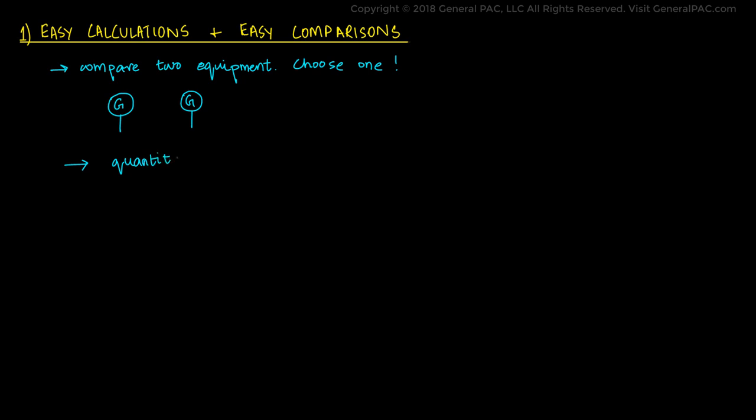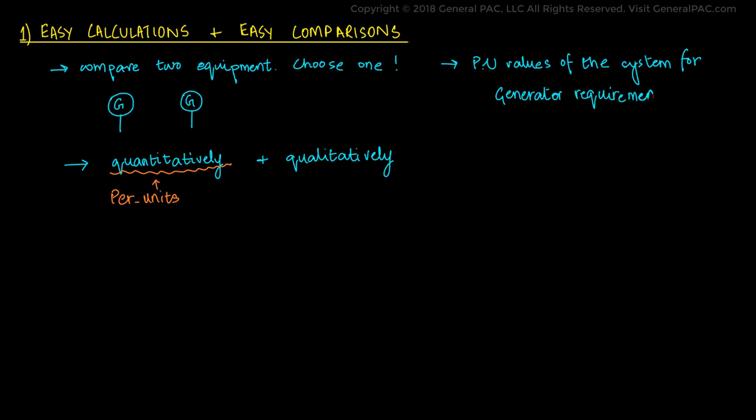The first reason is because of easy calculations and easy comparisons. When we are given two equipment to compare, say two generators, and we have to choose one for our power systems, we have to compare it quantitatively and qualitatively. Using per unit systems can come in handy for the quantitative part. We use per unit values of systems to determine the generator's requirements and then decide which will be the best fit for a power system. This is described in more detail in Part 2b.